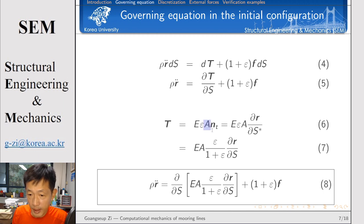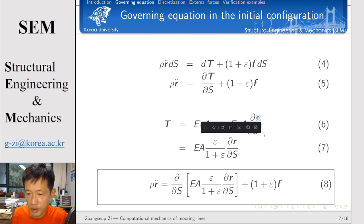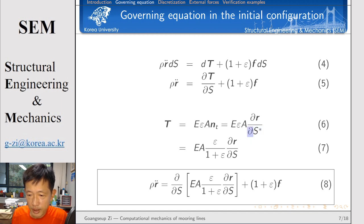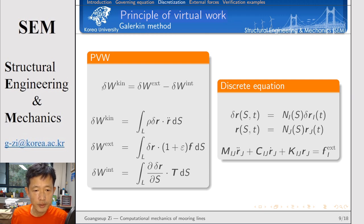The nt means the unit normal in the tangential direction of the cable. This tangential direction can be calculated by the partial derivative of the position vector with respect to the deformed length of the segment. Using the relation between ds and ds*, we can change ds* to (1 + epsilon) ds. Plugging the internal force into equation 5, we obtain the final governing equation in the initial configuration. We now discretize this governing equation using the standard Galerkin method, which for structural engineering problems is equivalent to the principle of virtual work. For a dynamic system, the kinetic virtual work equals the difference of external and internal virtual work.